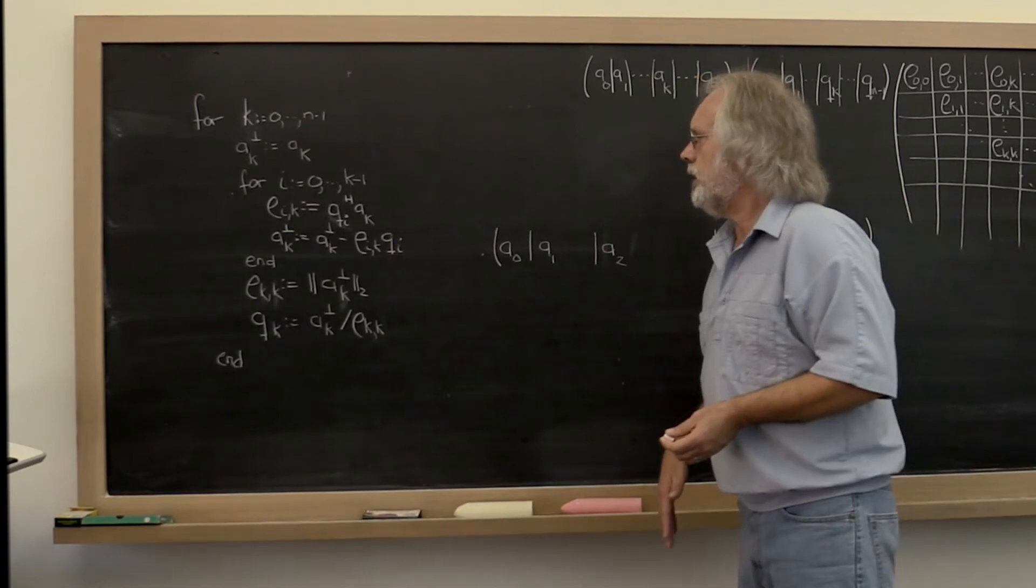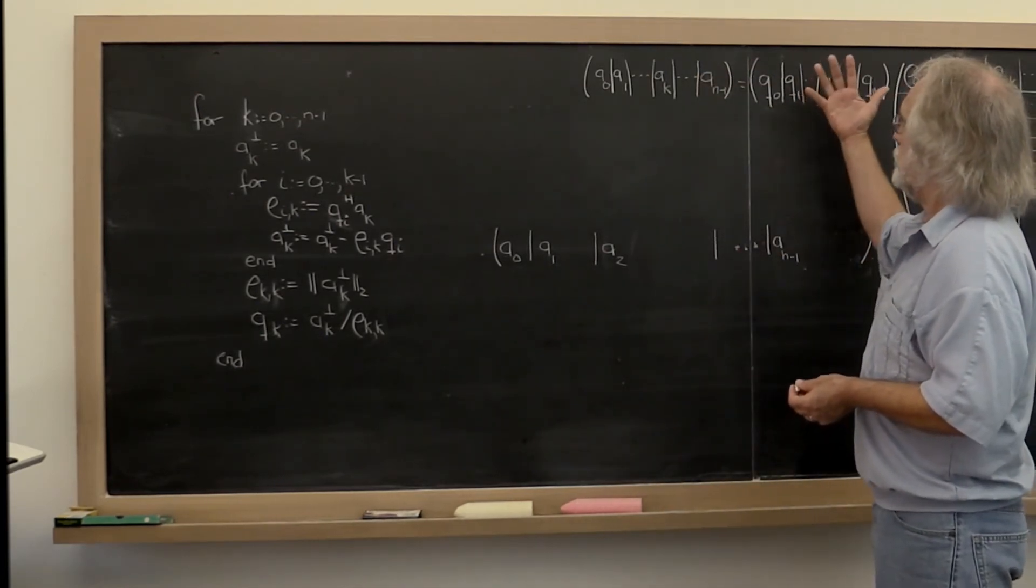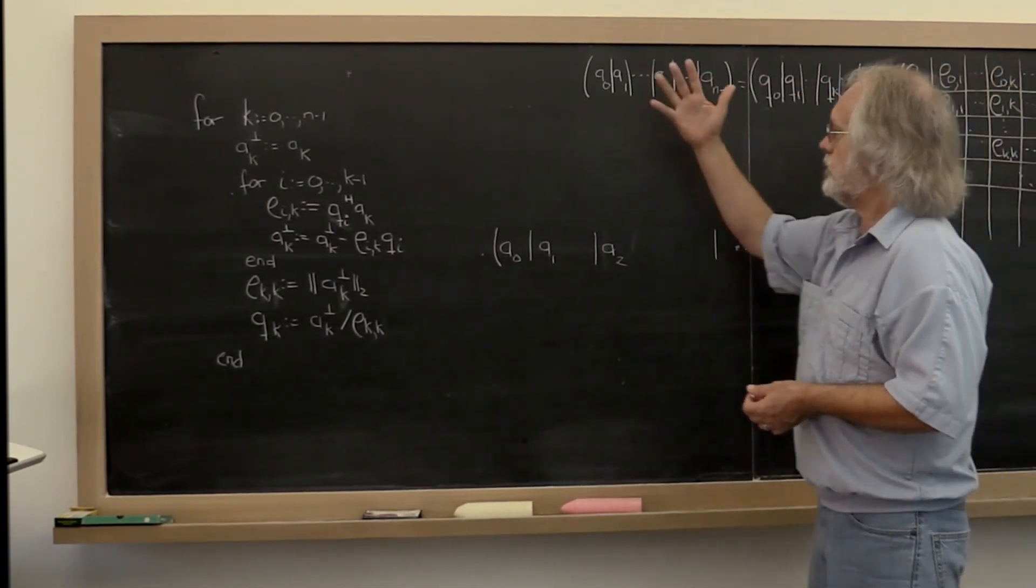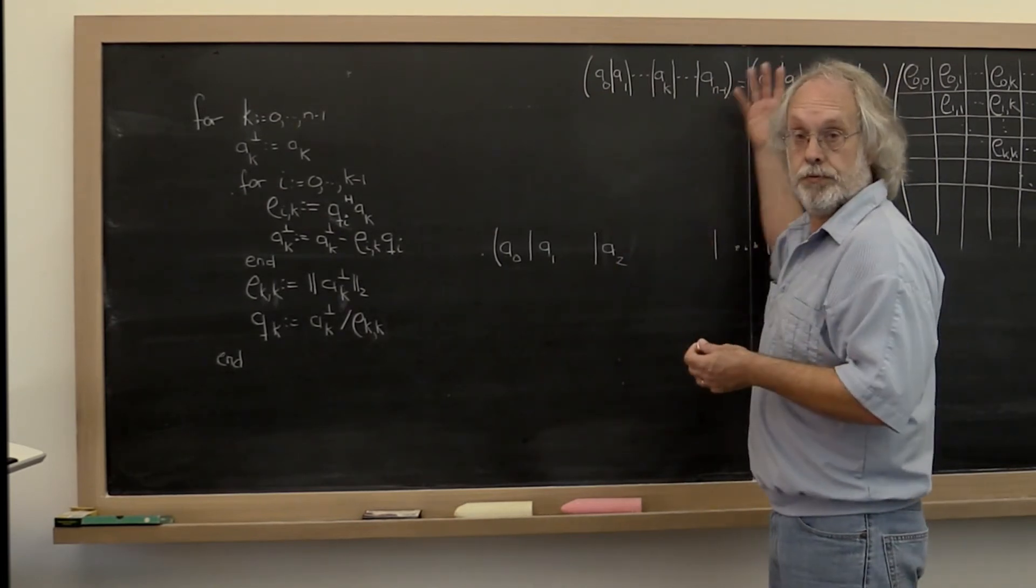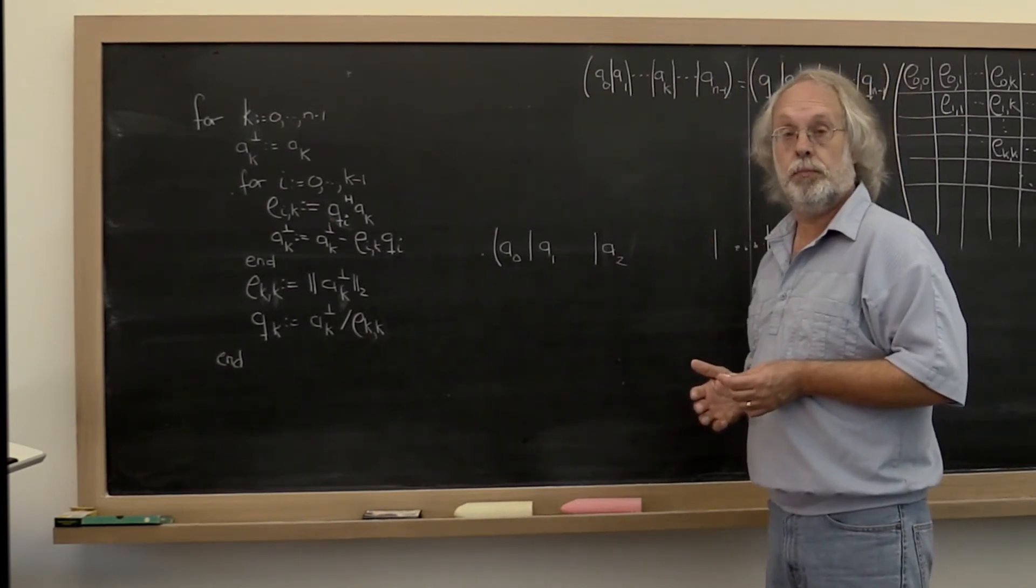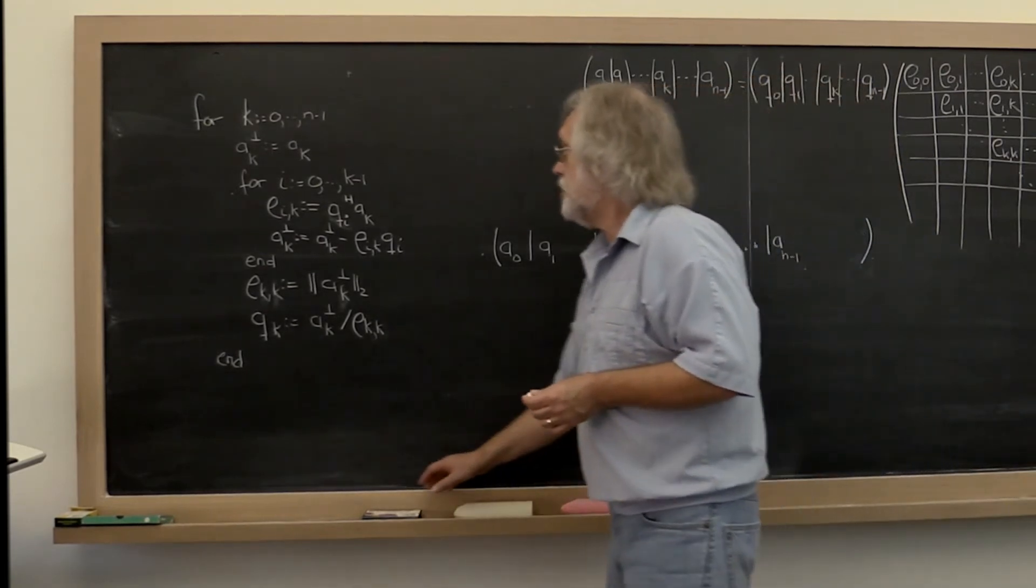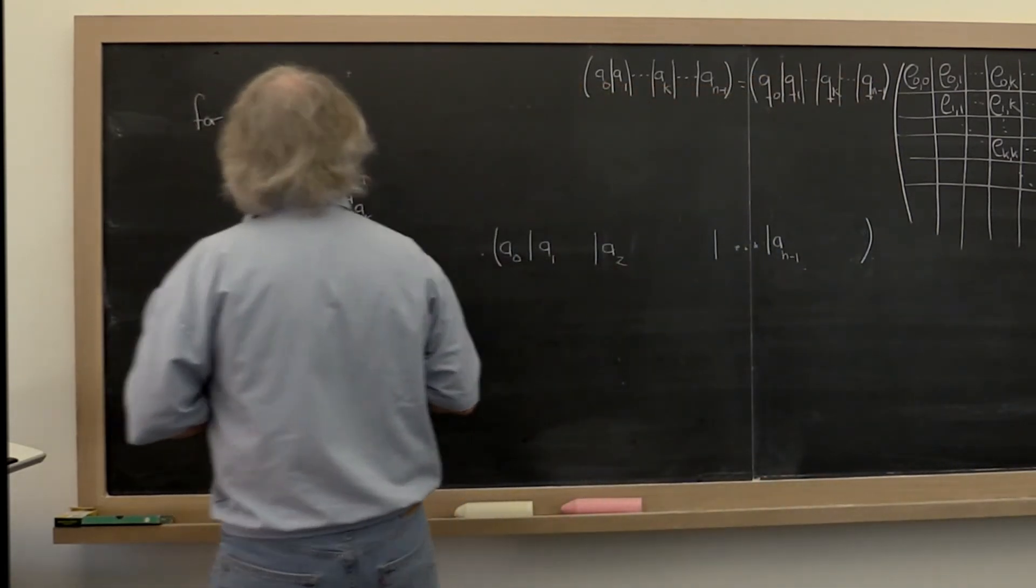we don't actually need a new array in which to store q. We could just overwrite the original matrix A with those vectors of q that we compute. And how would this change our algorithm here?